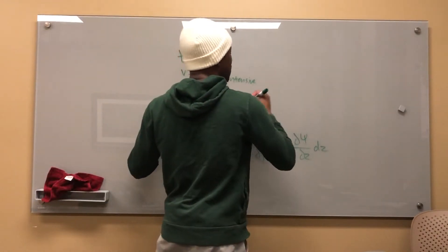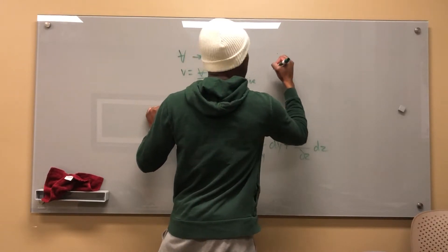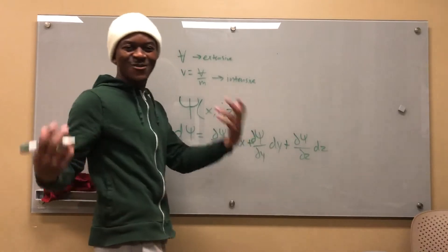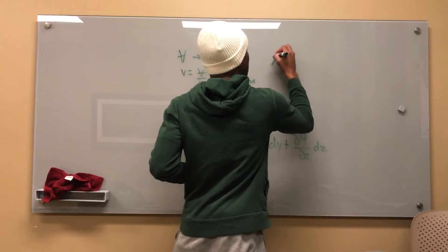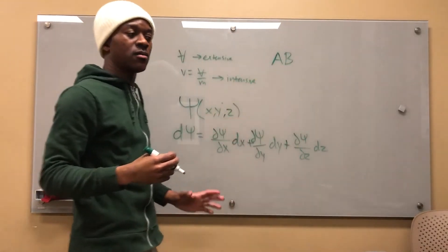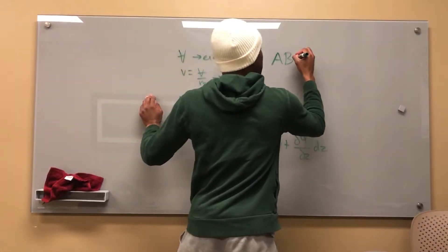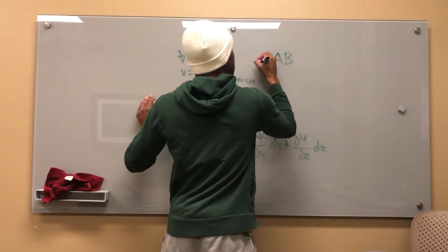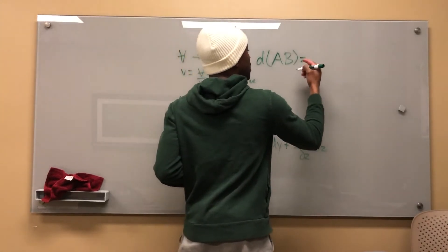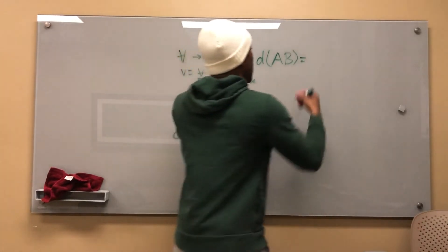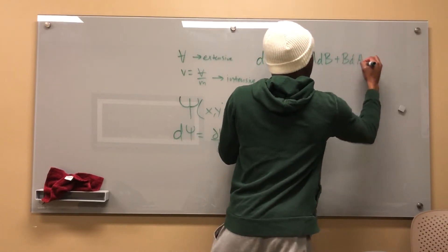We're also going to use things like product rule. If I have a function, let's say I have AB, that's my function. If I want to take the product rule, if I want to say d of AB, so the differential of a times b, that's going to be simply equal to a times db plus b times da.